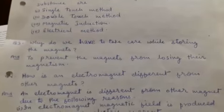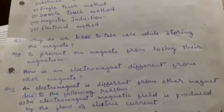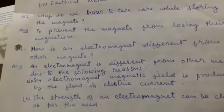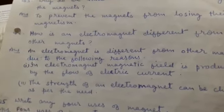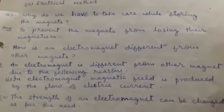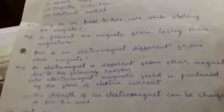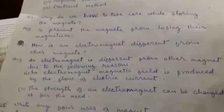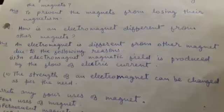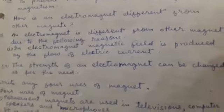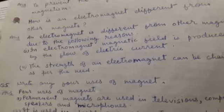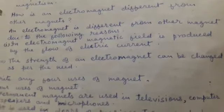Question 3: Why do we have to take care while storing the magnets? Answer: To prevent the magnets from losing their magnetism. Next question: How is an electromagnet different from other magnets? An electromagnet is different because, first, the magnetic field is produced by the flow of electric current, and second, the strength of an electromagnet can be changed as per the need.